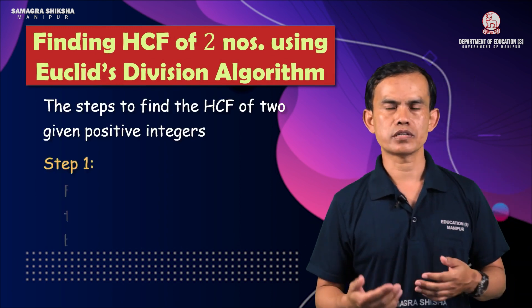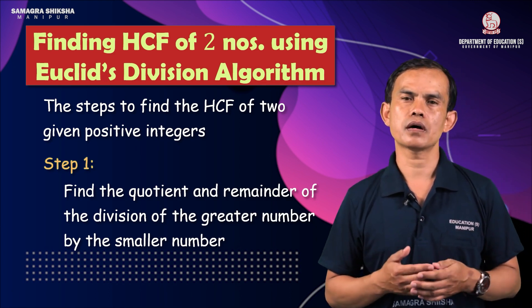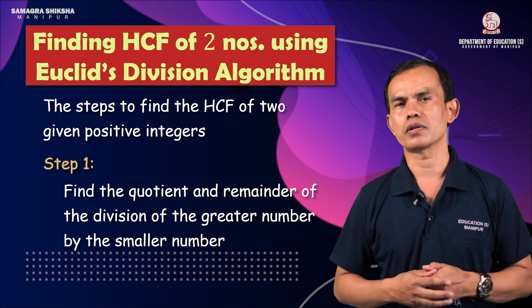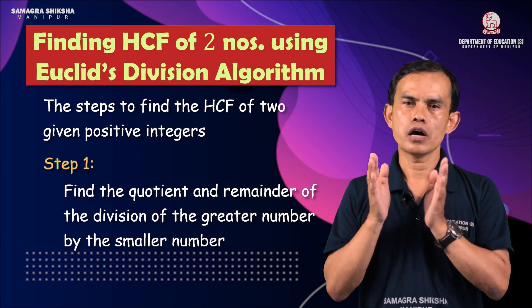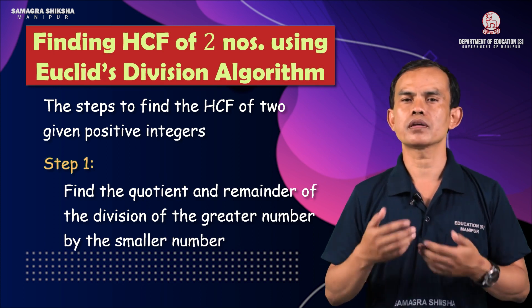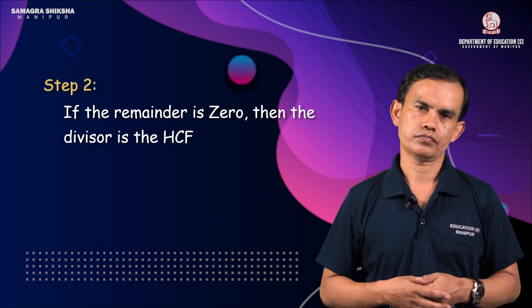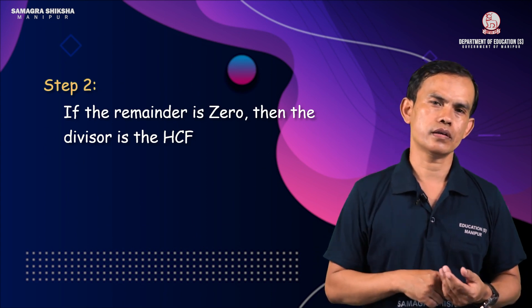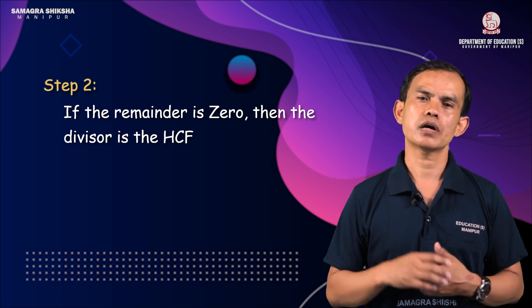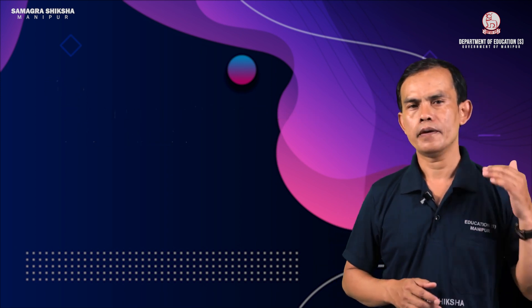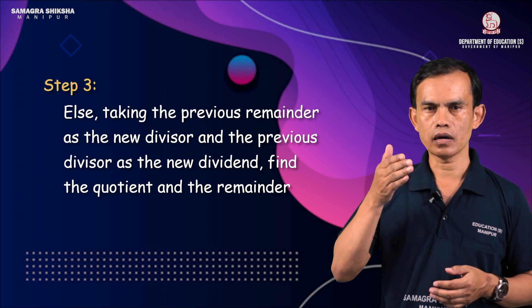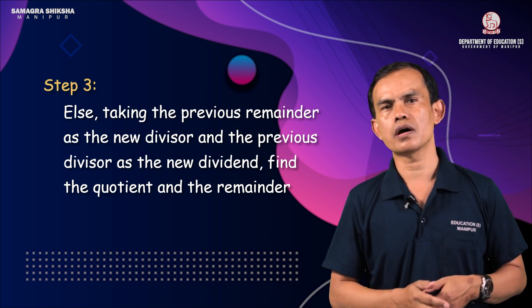Step 1: Apply Euclid's division lemma to the two given numbers. If the remainder is not zero, continue to the next step.